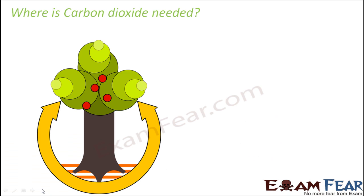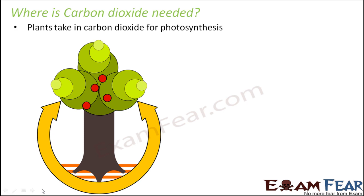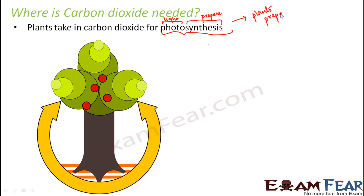Carbon dioxide is present in very small amounts in the air, but why do we even need it? Carbon dioxide is very crucial because plants need it for photosynthesis. The word 'photo' means light, and 'synthesis' means to prepare. So photosynthesis is the process in which plants prepare their own food in the presence of light.